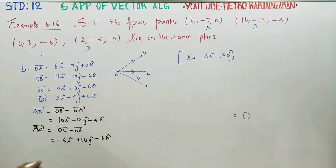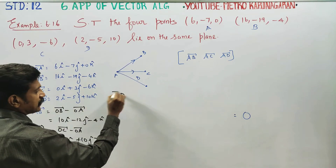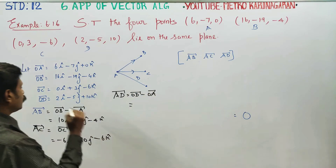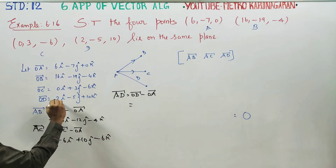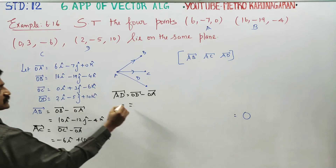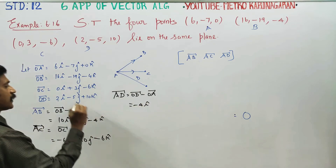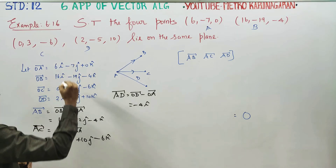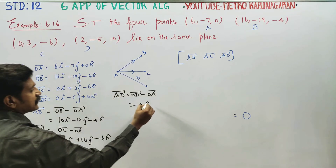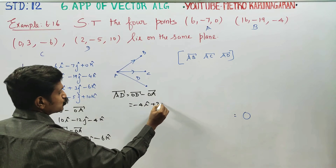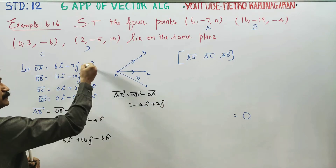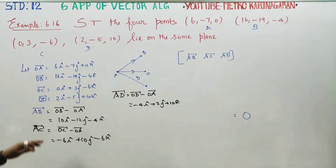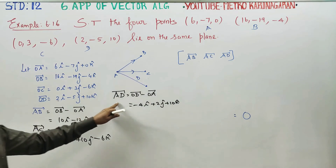Now AD vector. AD vector is equal to OD minus OA. That is: 2 minus 6 = minus 4i; minus 5 plus 7 = plus 2j; 10 minus 0 = 10k. So AD vector is minus 4i plus 2j plus 10k. The three lines AB, AC, AD vectors are ready.